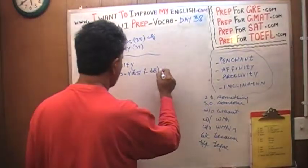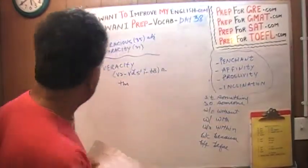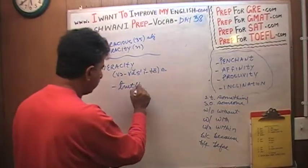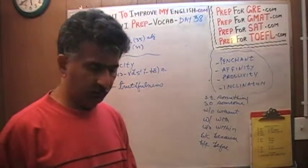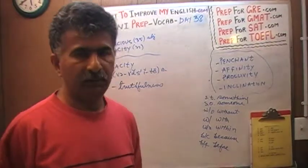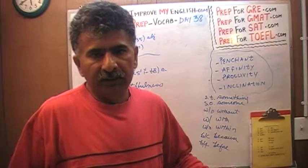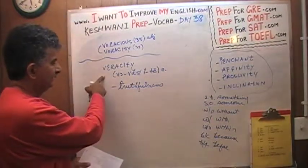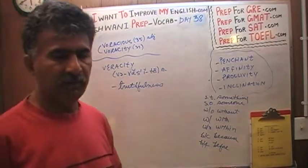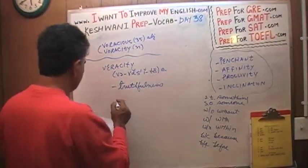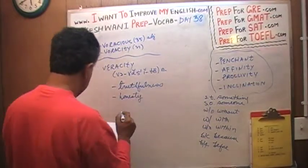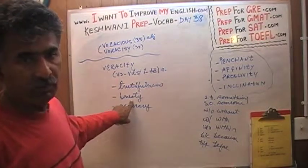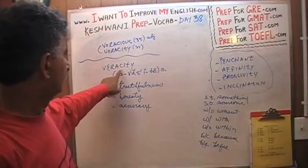Veracity just means truth — truthful and truthfulness as a noun. If you are being truthful, it's an adjective. If I'm being truthful, I'm telling you what is true, I am not lying to you, I'm being honest. And if I am being truthful, I have truthfulness. Similarly, veracity means truthfulness, honesty, accuracy. If I'm being accurate, I have accuracy. Veracity is a noun.